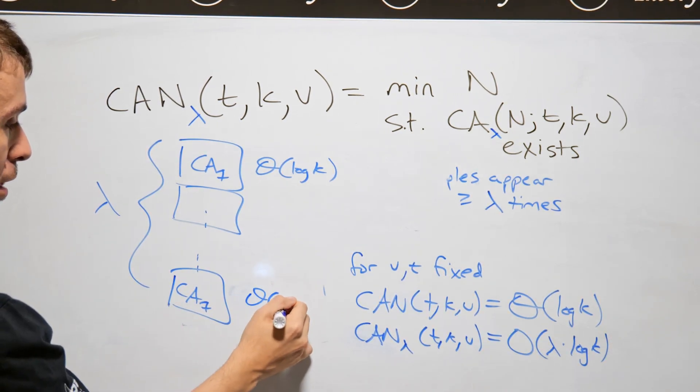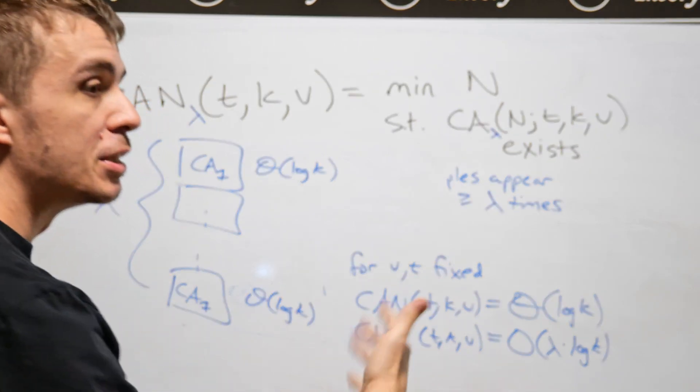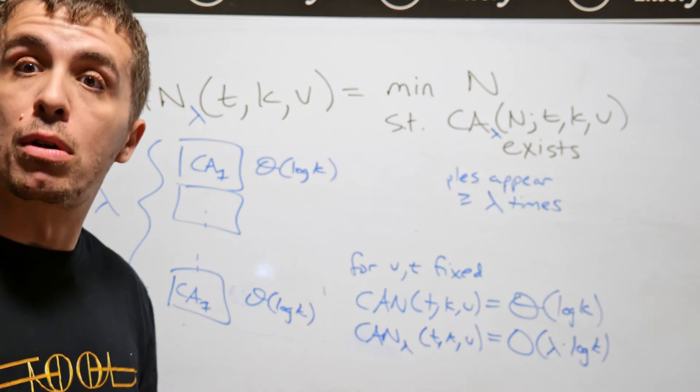and each time I take log k rows, then that proves that I will use at most lambda times log k times a constant that's hidden by the v and t here, number of rows. But then is that the absolute best that you can do?